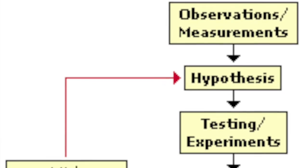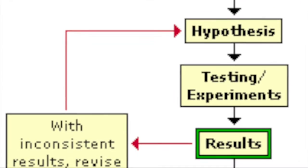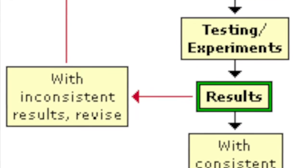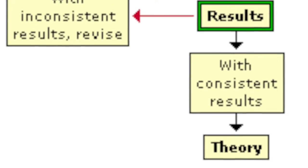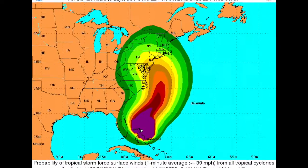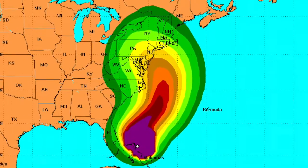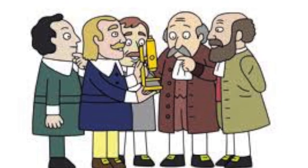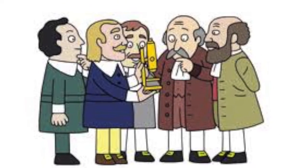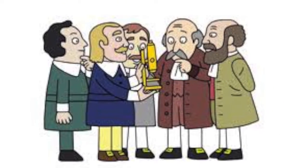When a hypothesis or a group of hypotheses have been tested many times and are supported by a lot of evidence, it then becomes a theory. Theories allow us to make predictions. The cell theory is one such example, and we are going to go deeper into this.